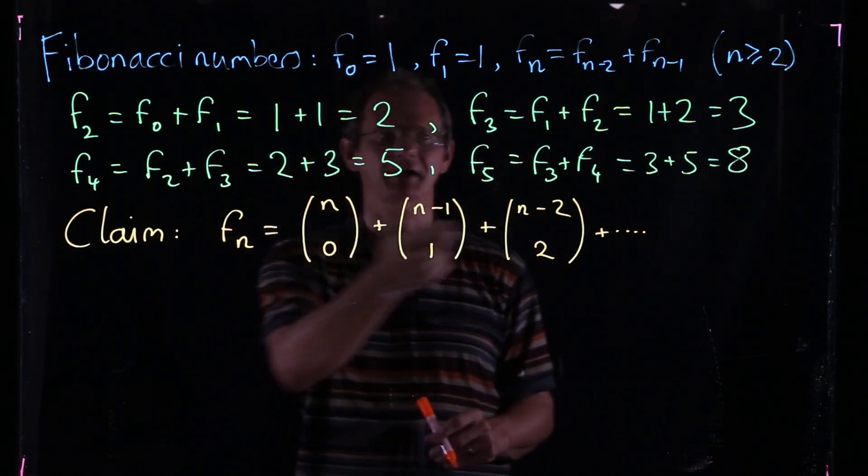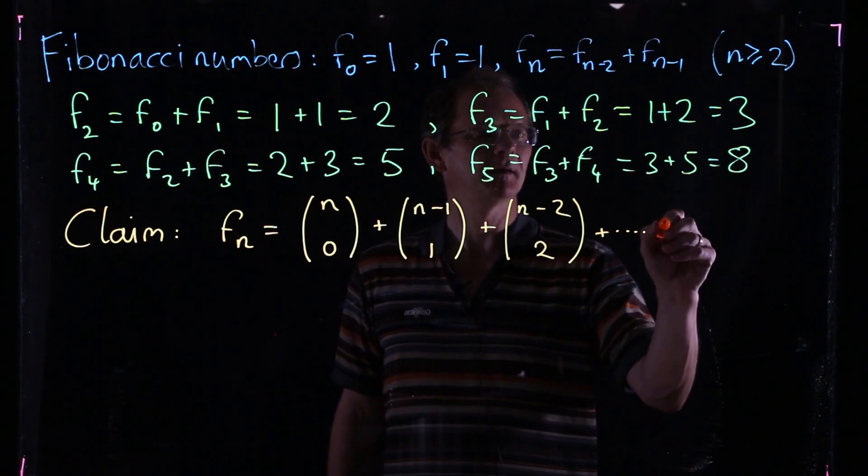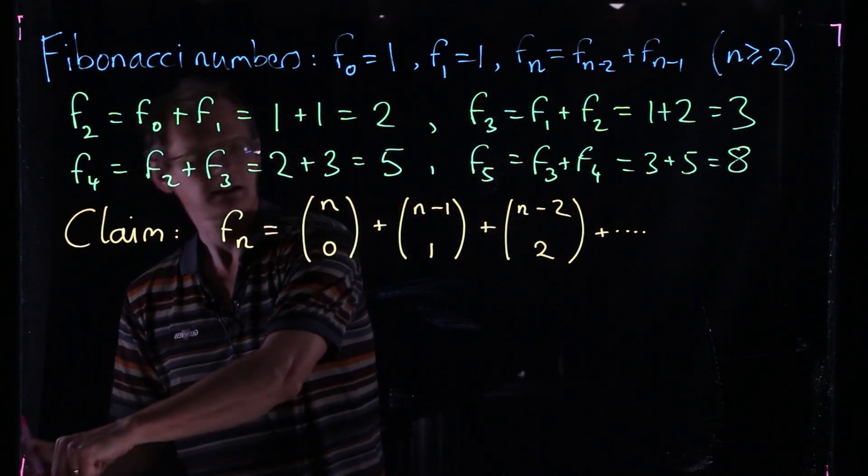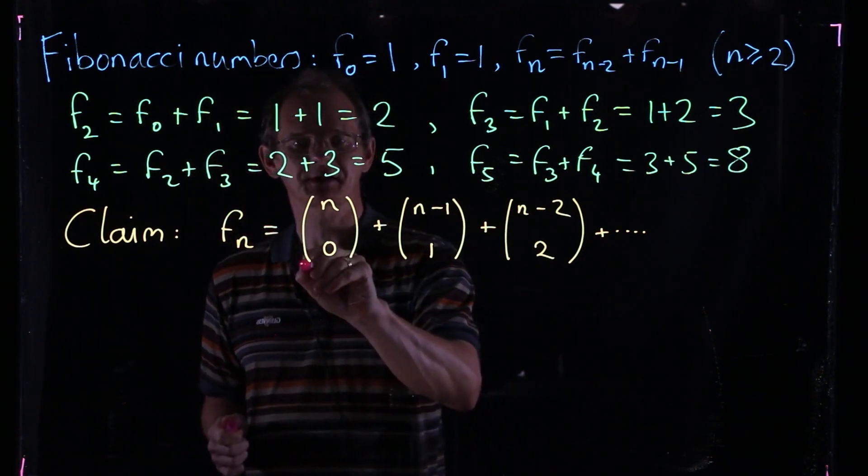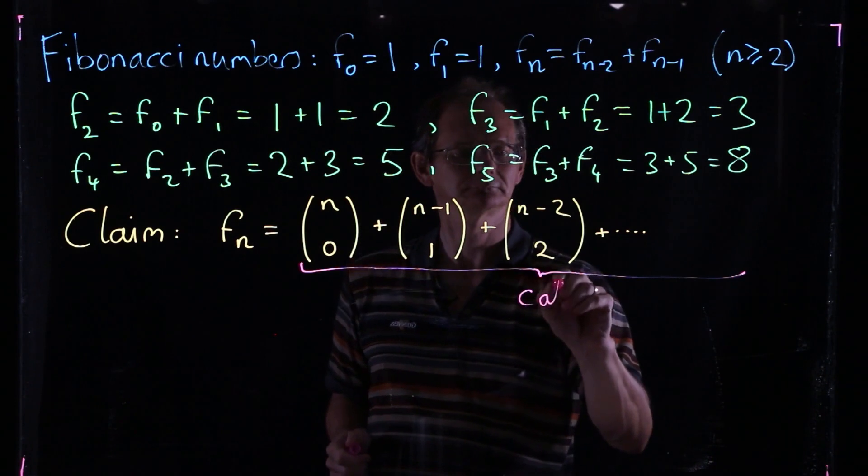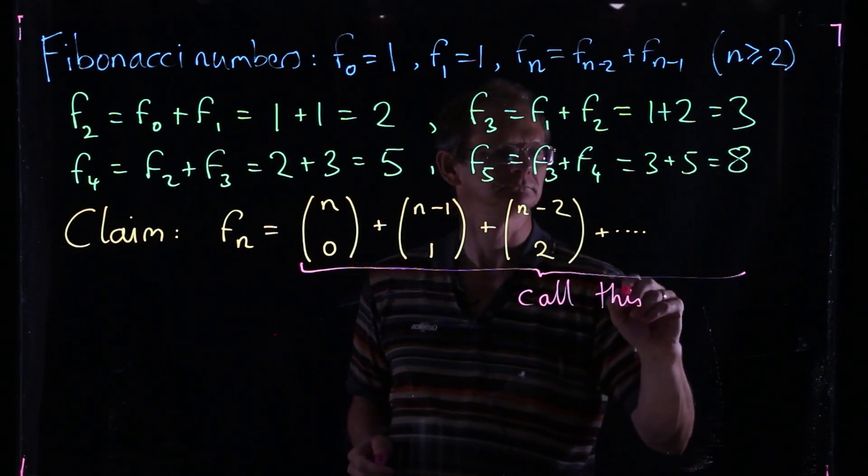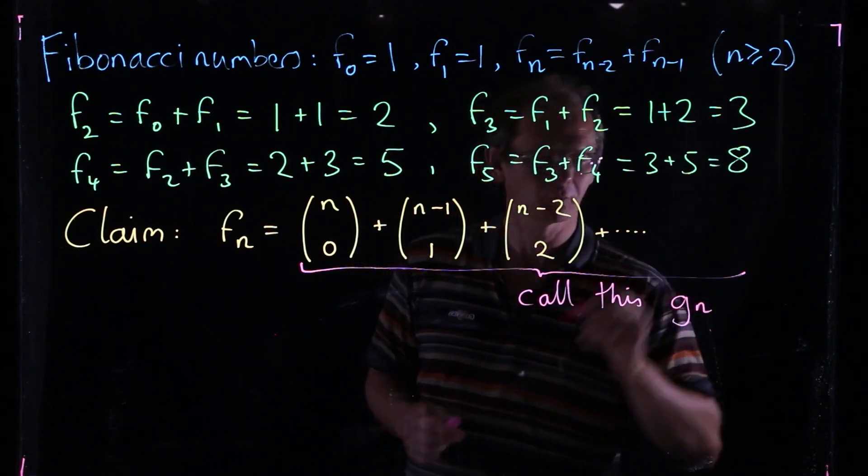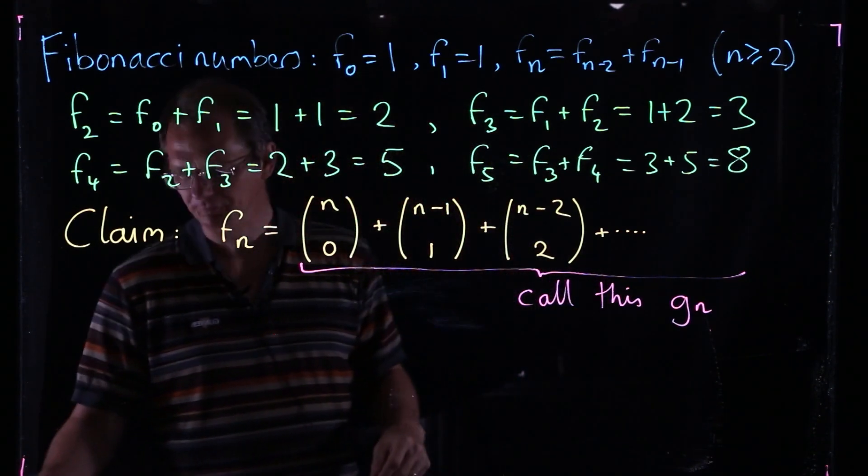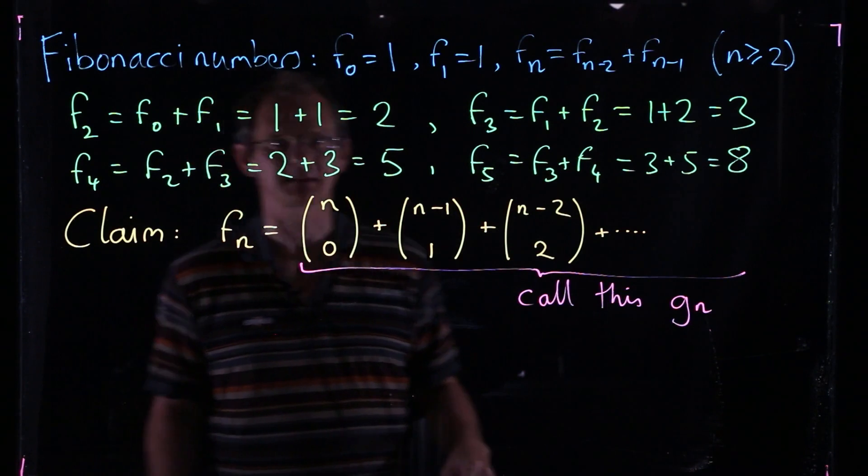So this is what we're supposed to be proving, that Fn is equal to the sum here. Let's introduce notation for this. We're going to call this sum Gn. The claim now is that we're supposed to prove that Fn is the same as Gn.